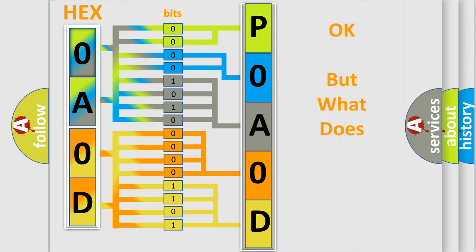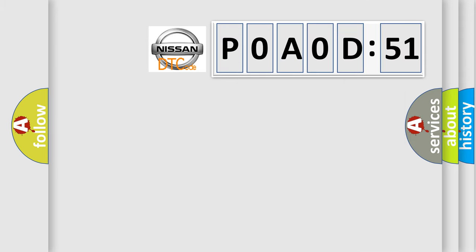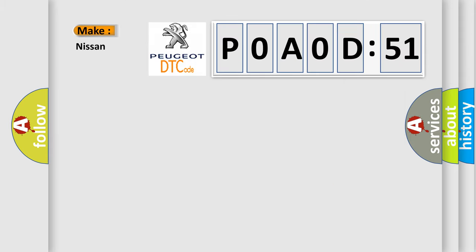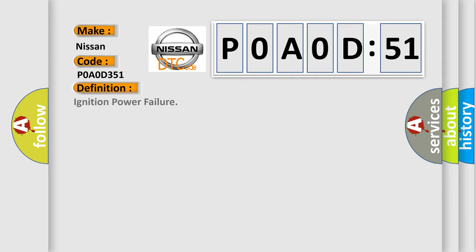The number itself does not make sense to us if we cannot assign information about what it actually expresses. So, what does the Diagnostic Trouble Code P0A0D351 interpret specifically for Nissan car manufacturers? The basic definition is: Ignition Power Failure.